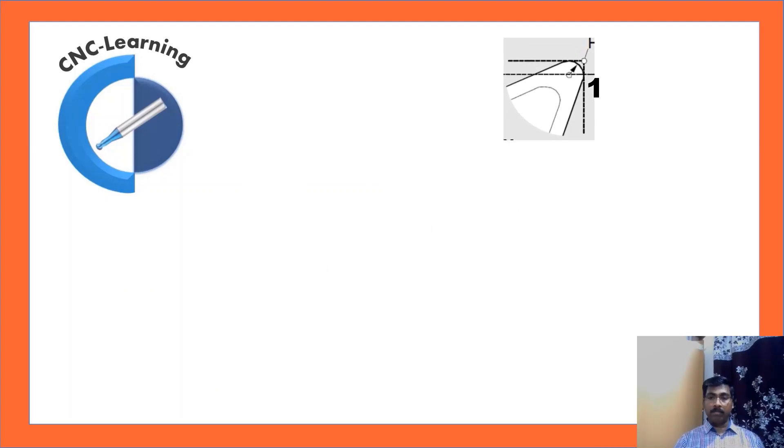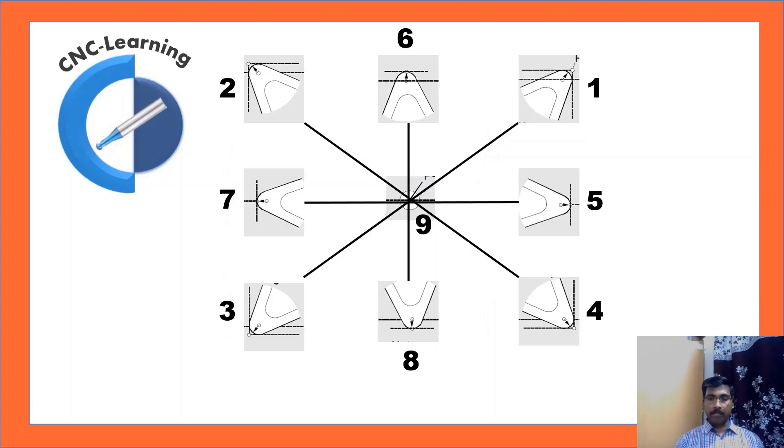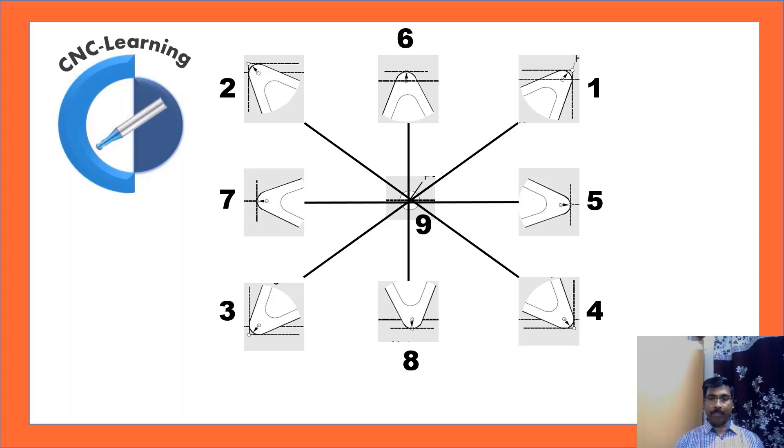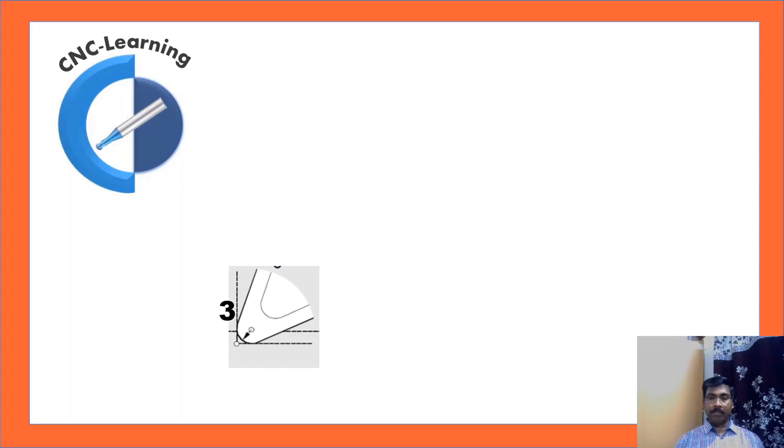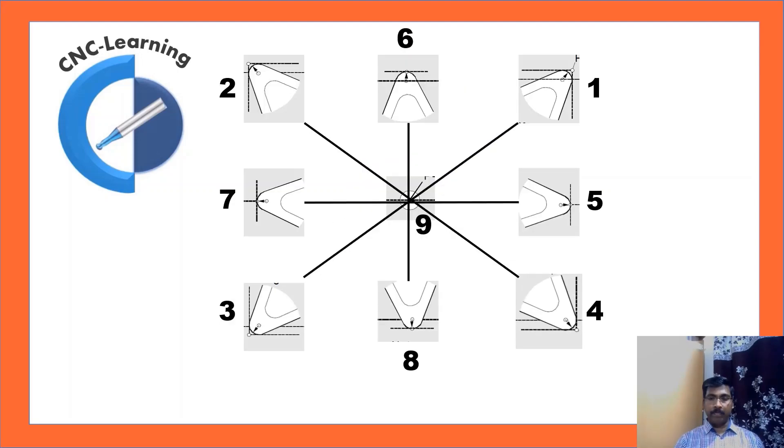Now let us see tool type 1. Tool type 1 is a boring bar with reverse turning. Tool type 2, it is again a boring bar with normal turning. Tool type 3, regular turning.